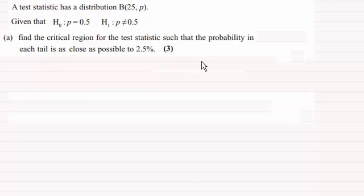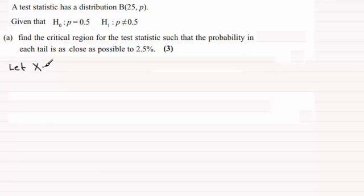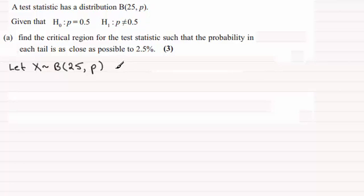Welcome back. For this one, first of all I'm going to define a random variable for this binomial distribution. Let X be distributed binomially, where n equals 25 is the number of trials and P is the probability of success. We need to find the critical regions.